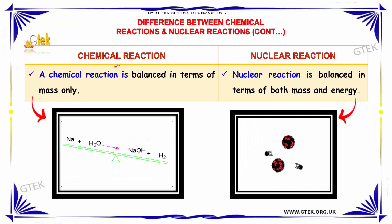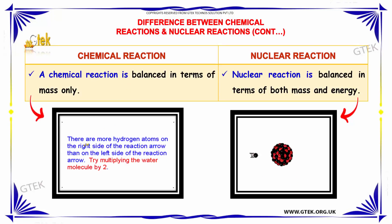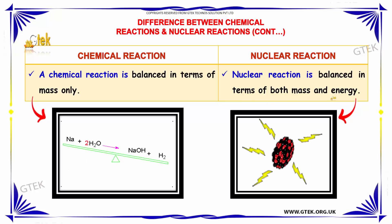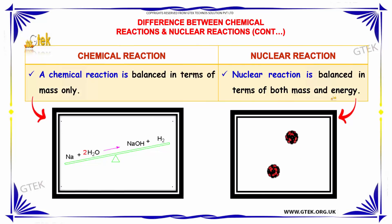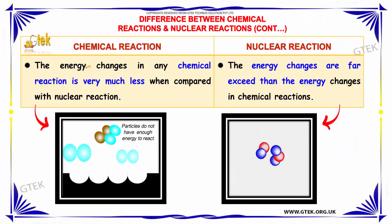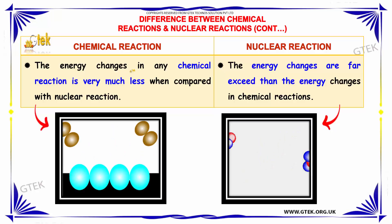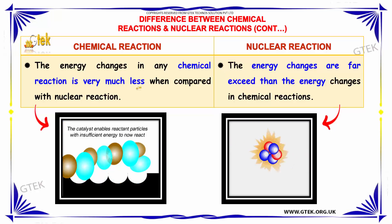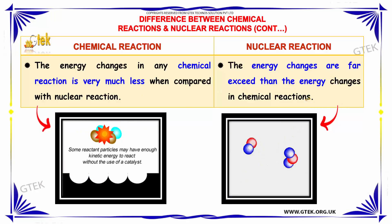Here is another difference. A chemical reaction is balanced in terms of mass only. A nuclear reaction is balanced in terms of both mass and energy. In chemical reaction, the energy changes in any chemical reaction is very much less when compared to nuclear reaction. The energy changes are far exceed than the energy changes in chemical reaction.